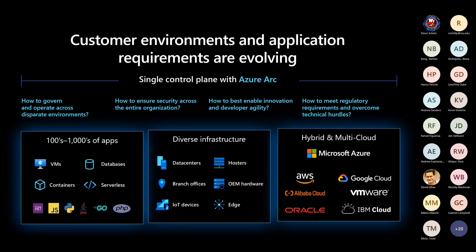Customers have been using cloud more and more, and there are so many different environments they're having to manage, especially when you have different interfaces from cloud and on-prem. Now there's also a new paradigm with multi-cloud. One of the challenges customers face is: how do I manage all the different screens, all the disparate apps and infrastructures across multi-cloud?